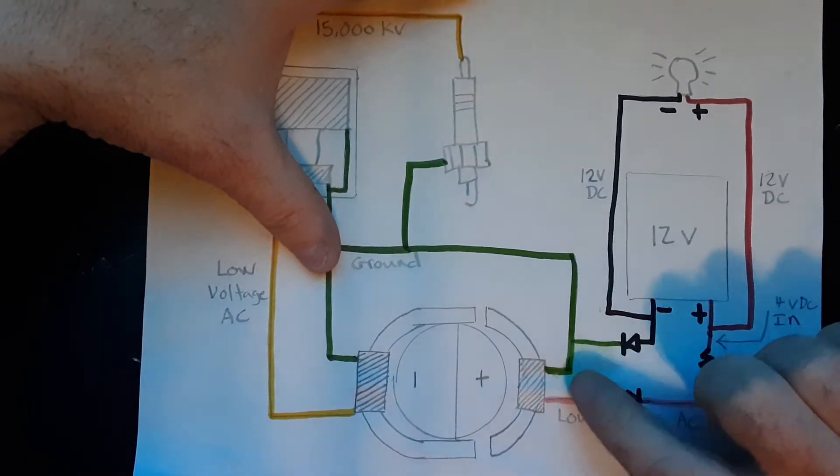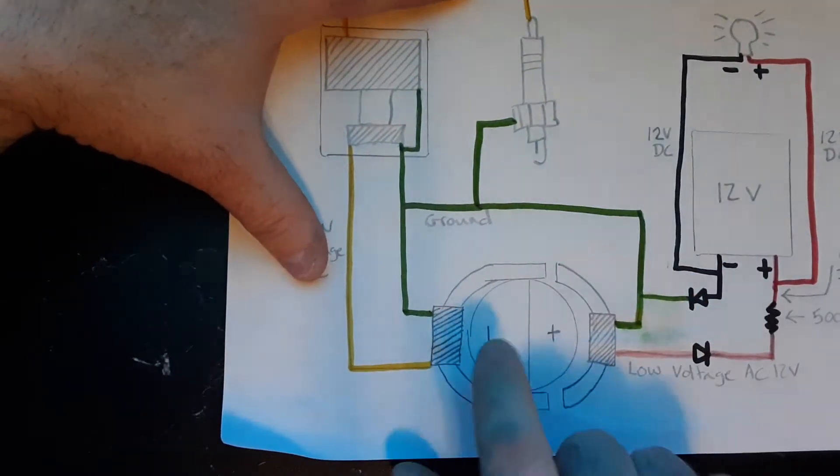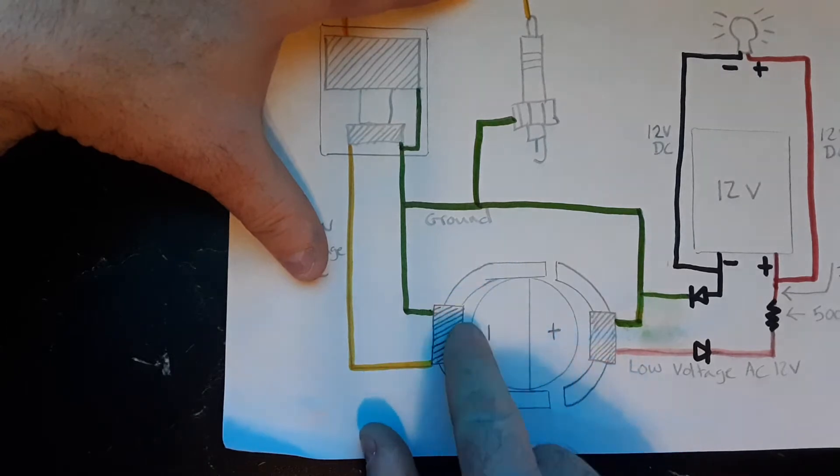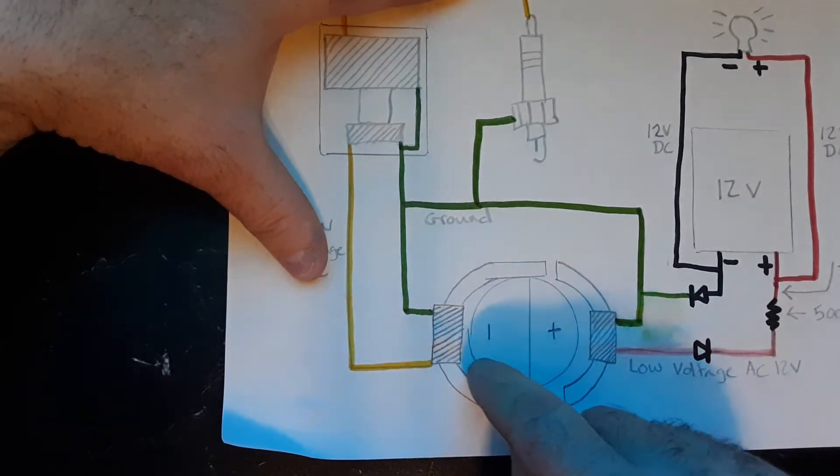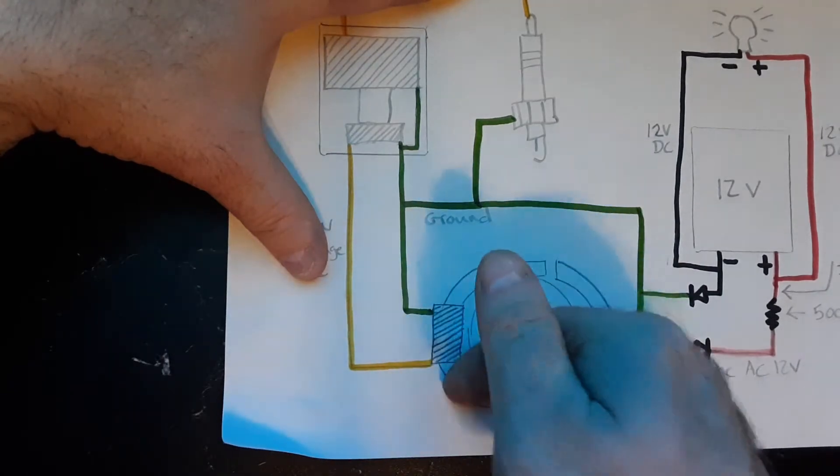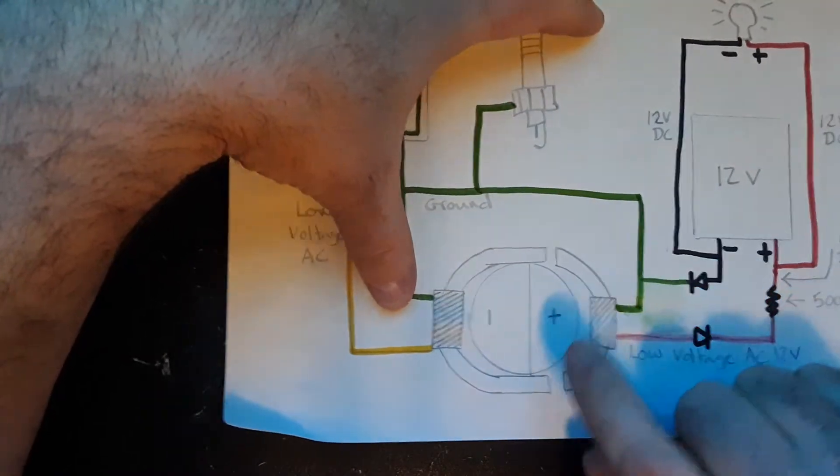What happens is there's a positive and a negative magnet. When one goes around and hits the switch, when the positive one goes by here, they'll switch, so it makes alternating current.